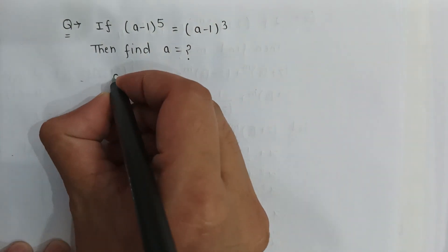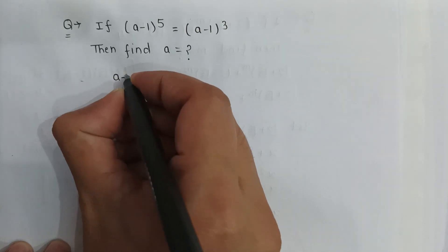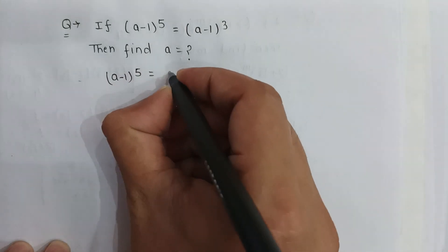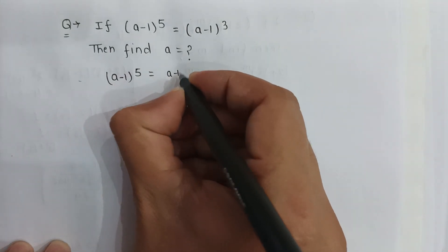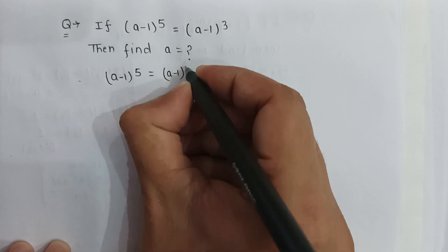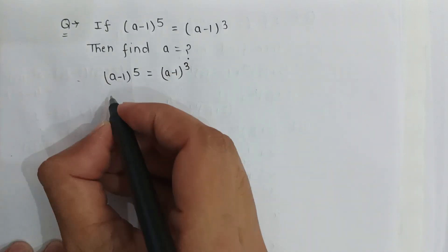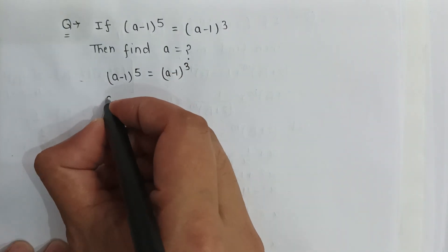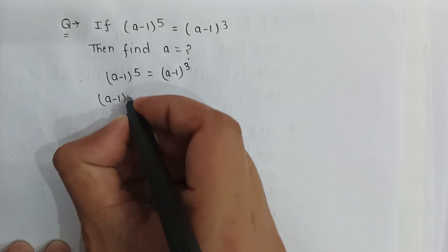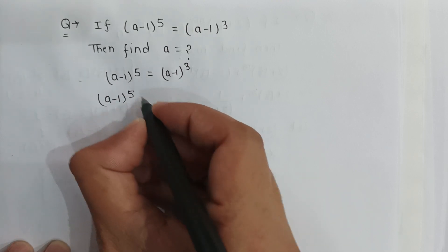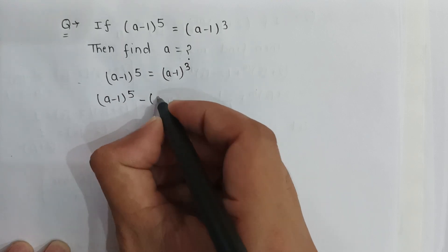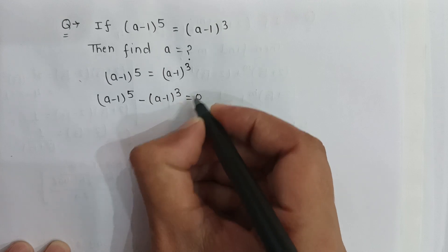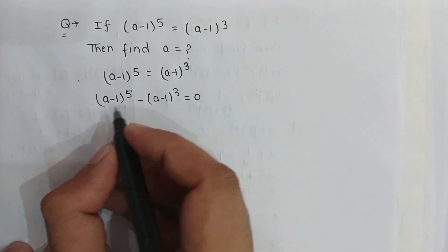So here, (a minus 1) to the power 5 is equal to (a minus 1) to the power 3. We rearrange to get (a minus 1) to the power 5 minus (a minus 1) to the power 3 is equal to 0.